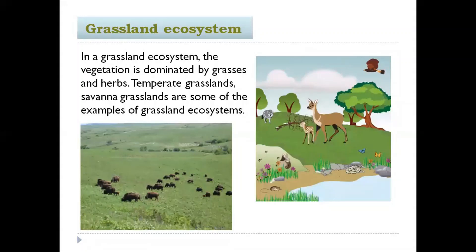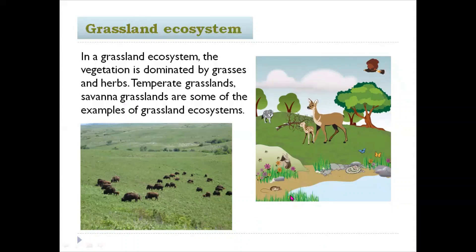In the grassland ecosystem, the vegetation is dominated by grasses and herbs. The vegetation is sparse and spread out with gaps. Temperate grassland and savannah grassland are some examples of grassland ecosystems.